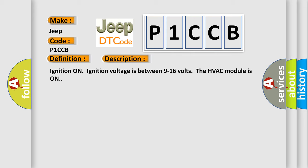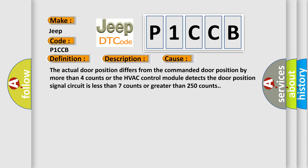This diagnostic error occurs most often in these cases: The actual door position differs from the commanded door position by more than four counts, or the HVAC control module detects the door position signal circuit is less than seven counts or greater than 250 counts.